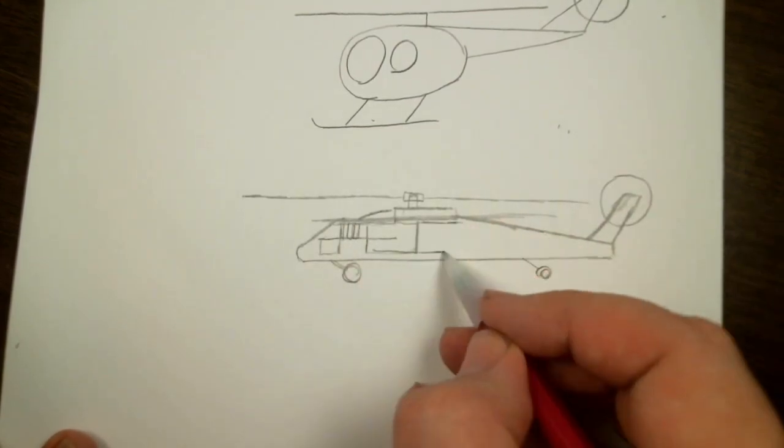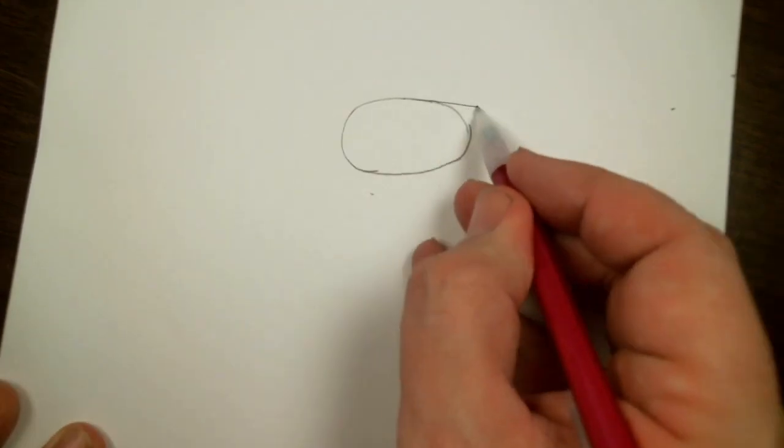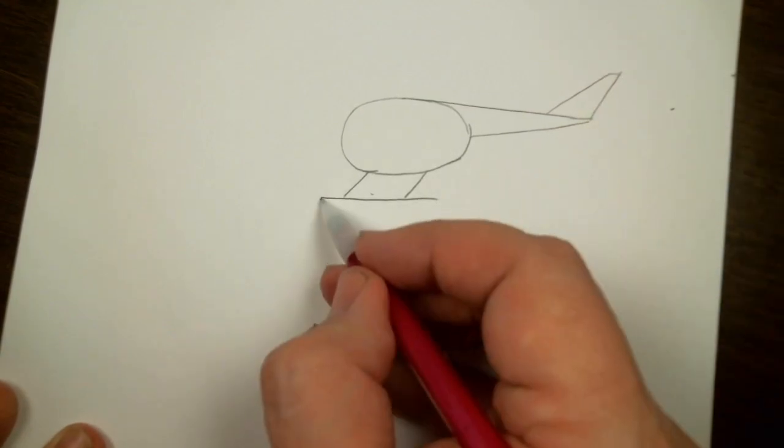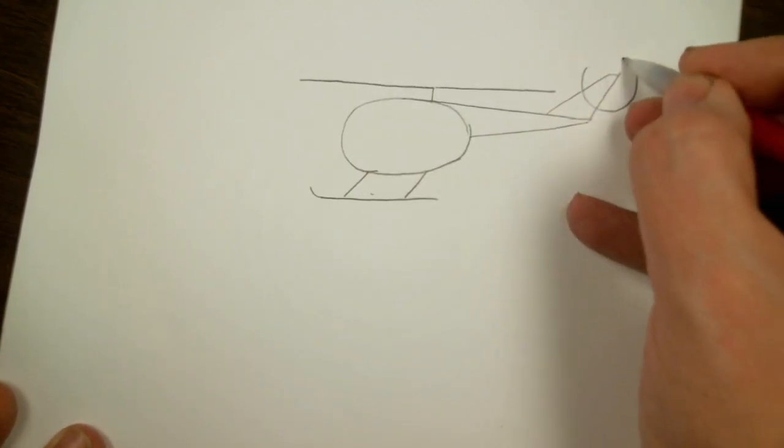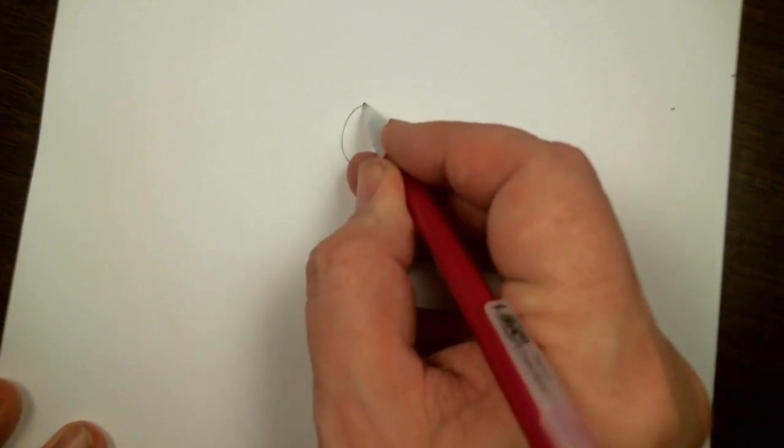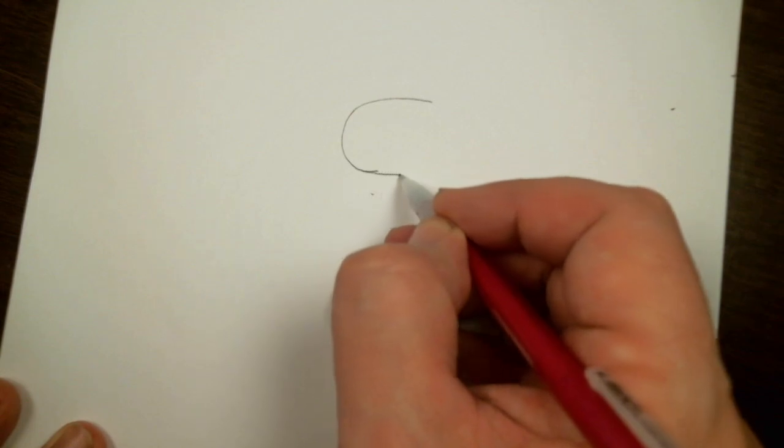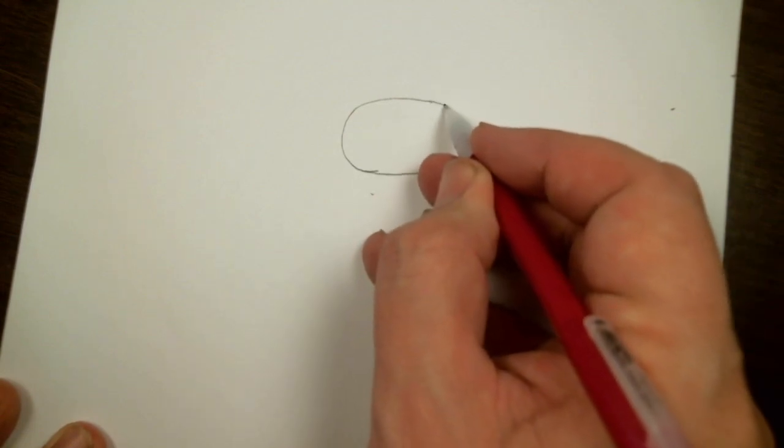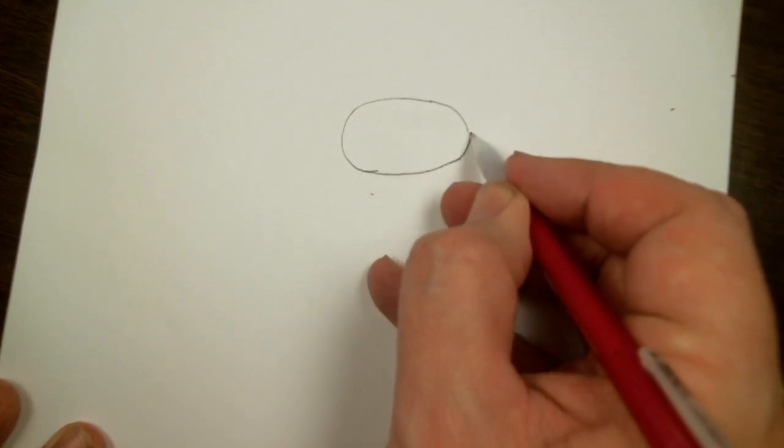Today we're going to draw a simple helicopter. We're going to start with an oval. It doesn't have to be perfect.